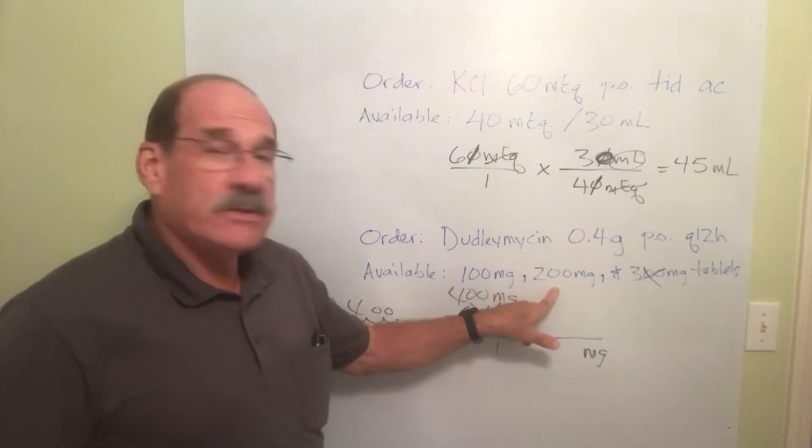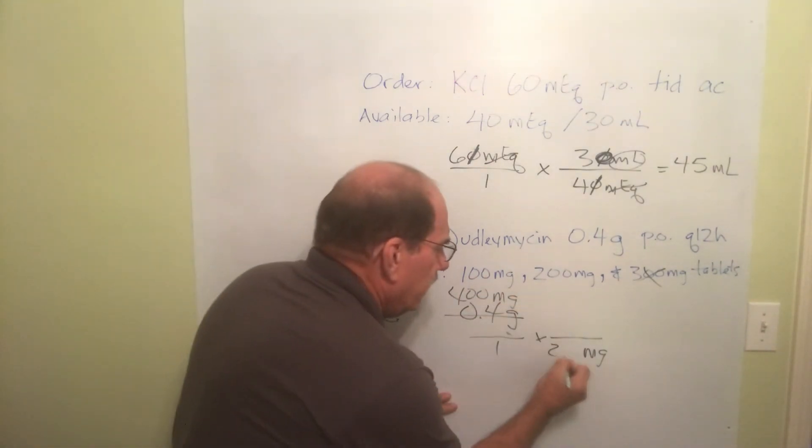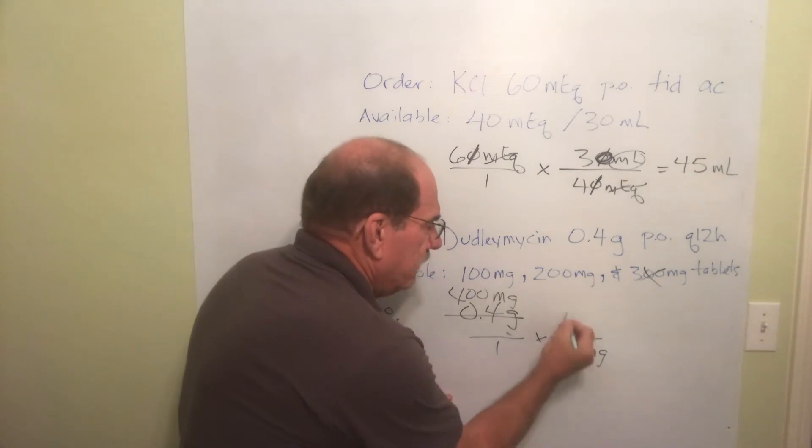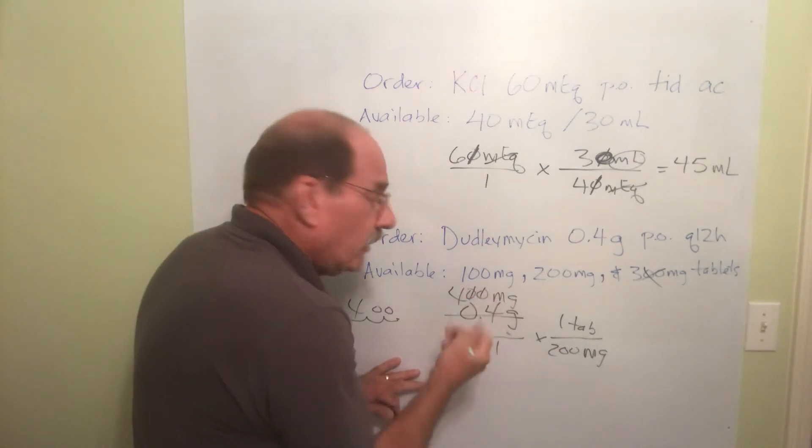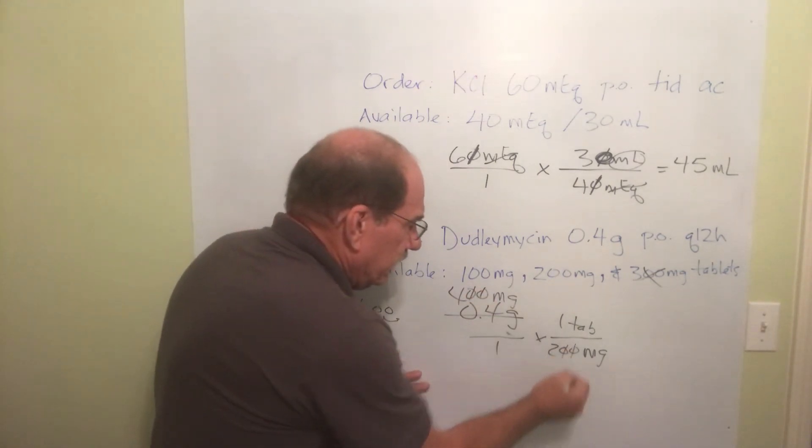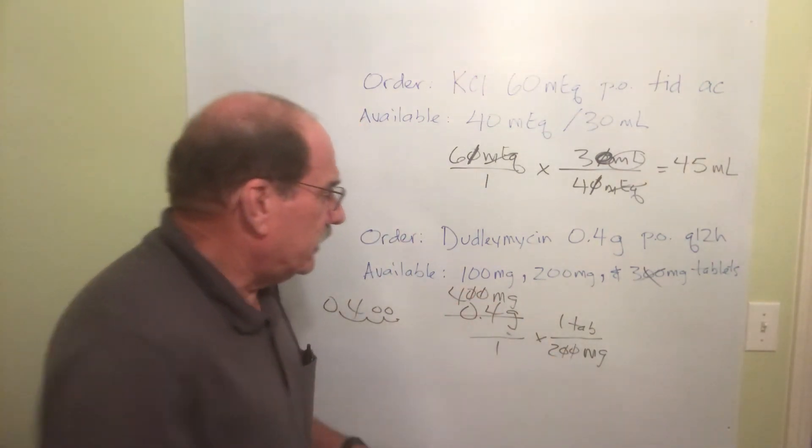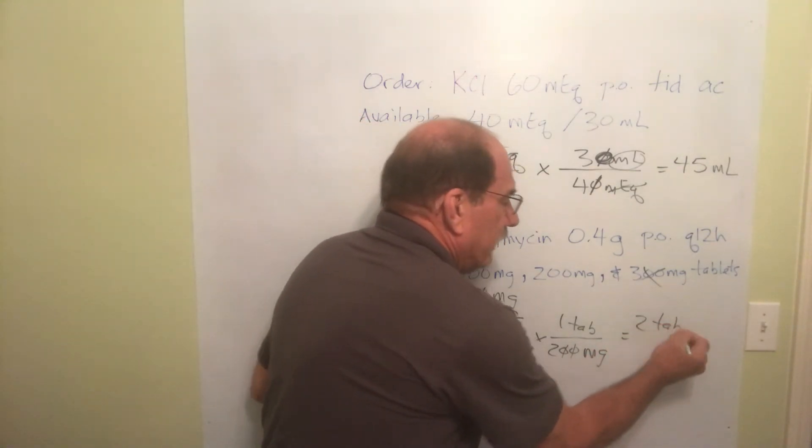But the best option of the other two is the 200. If you give 200 milligrams in every one tablet, again, hey, if you like that zero canceling thing, zero zero, two zeros there, zero zero, two zeros there. Four divided by two, I give two tablets.